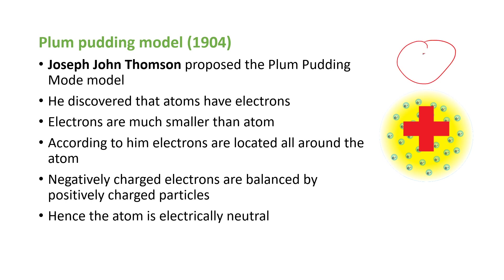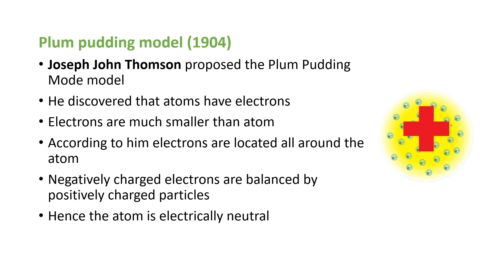In the same way, the electrons are completely scattered and present everywhere around the atom. The negatively charged electrons are balanced by positively charged particles — he did not specifically name them as protons, but the positively charged particles are nothing but protons. Hence, the atom is electrically neutral according to the Plum Pudding model, because the negative and positive charges balance each other.